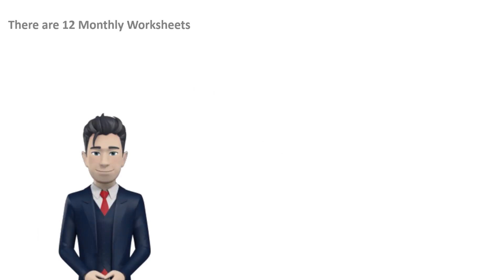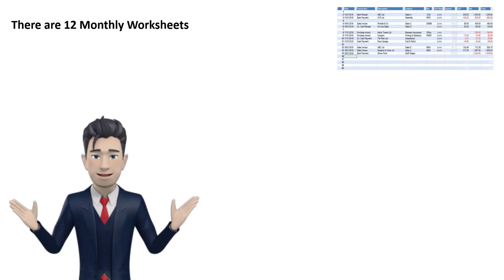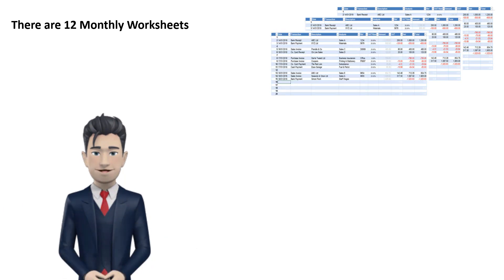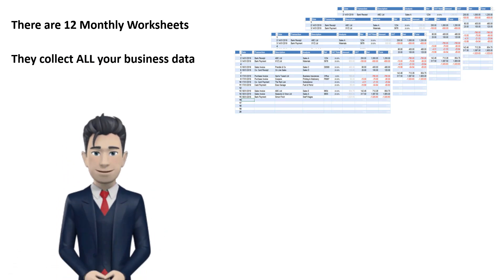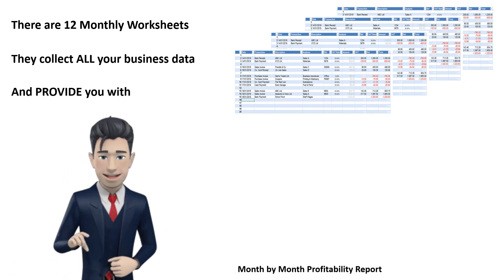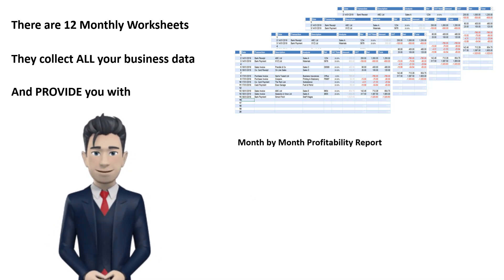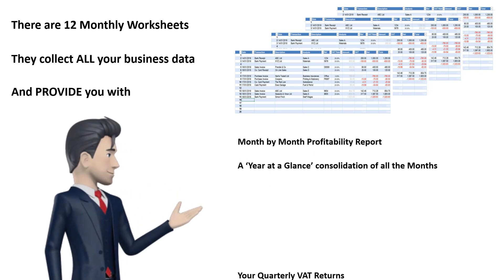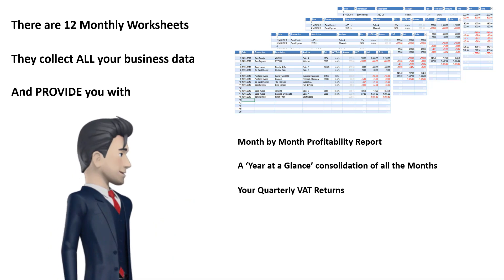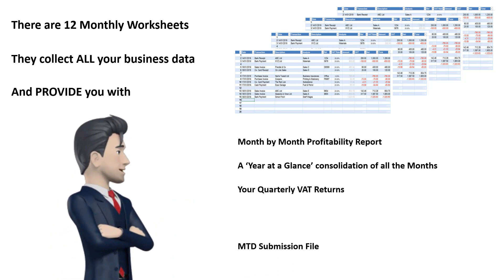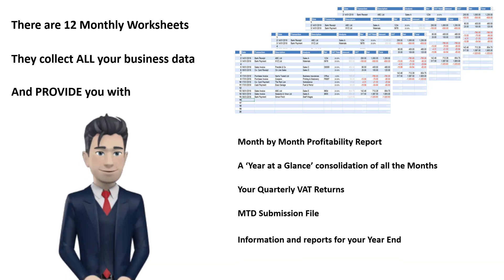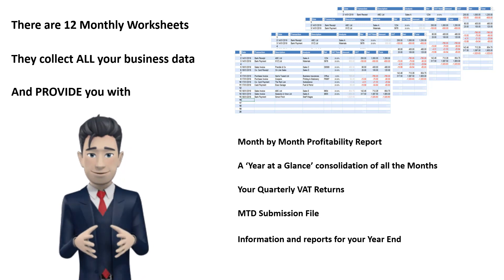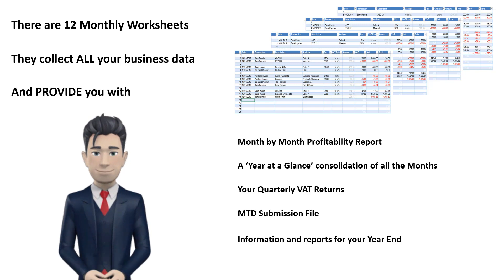The Easy Accounting Spreadsheet has 12 identical monthly worksheets. These worksheets collect all of your business data and will provide you with the following essential reports: a month-by-month profitability report, a year at a glance consolidation of all of the months, quarterly VAT returns, an MTD submission file, and information and reports for your year end.